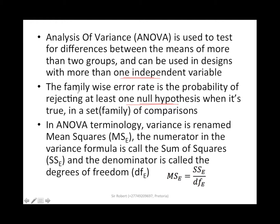Remember that decision errors also apply to ANOVA. The ANOVA works with groups, which are sometimes called families or sets. In ANOVA terminology, variance is renamed as mean squares — because we are doing analysis of variance, a group of variances are combined into one variance called mean squares, represented by the symbol MSE. The numerator in the variance formula is called the degrees of freedom.